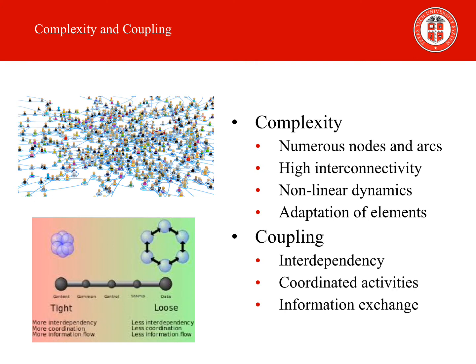An organization may be described as complex if it may be represented as a network with numerous nodes and arcs that are highly interconnected. In this network representation, nodes represent people, machines, and technology, and arcs represent their interrelationships. As a consequence of complexity, the organization may exhibit nonlinear dynamics — a minor disturbance in one part may bring down the entire organization in ways that are unforeseen or unforeseeable. The nodes and arcs are constantly adapting and reorganizing in response to external stimuli, so the network is in a constant state of flux.